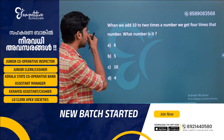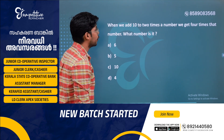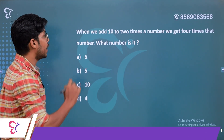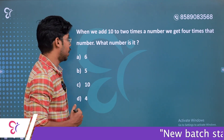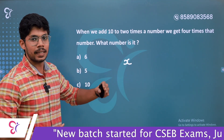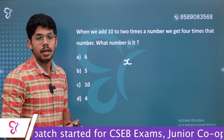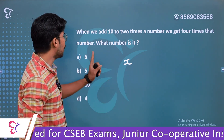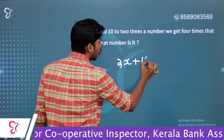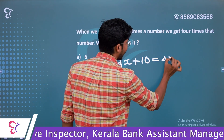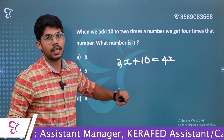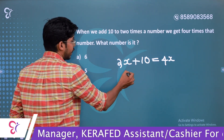Next question: When we add 10 to 2 times a number, we get 4 times that number. What is the number? Setting up the equation: 2x plus 10 equals 4x.